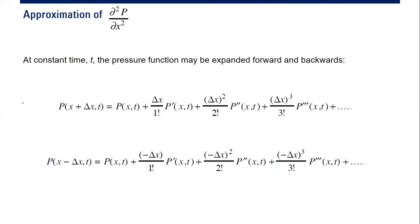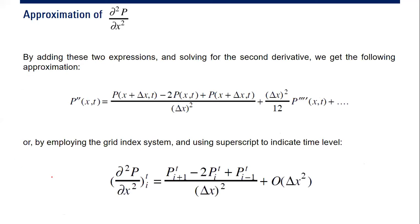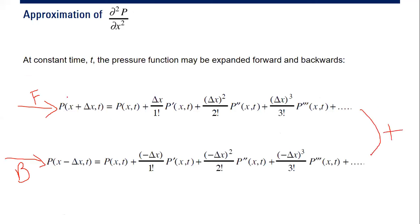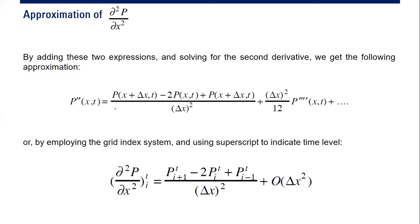This is the expansion form forward and backward. By adding these two expressions and solving for the second derivative, we get the following expression. Adding the forward expansion plus the backward expansion, and rearranging, the second derivative goes to the left because everything else goes to the right. We solve like this, so the second derivative is this one. This can be written using the grid index system and superscript to indicate time level.